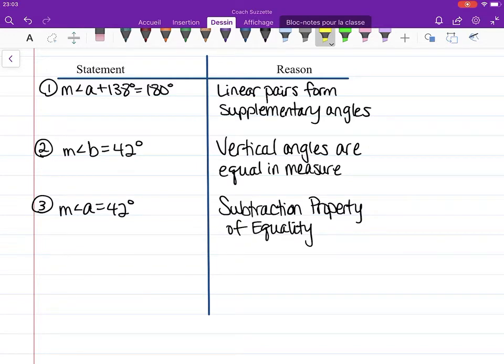Well, if this is equal to something and this is equal to that same something, then it must be the case that these are equivalent to each other. You can say that that's true by transitivity—we could also use substitution, because if 42 is equal to this, then that means I can put this here. Let's go with that. By substitution, we have the measure of angle a equal to the measure of angle b.